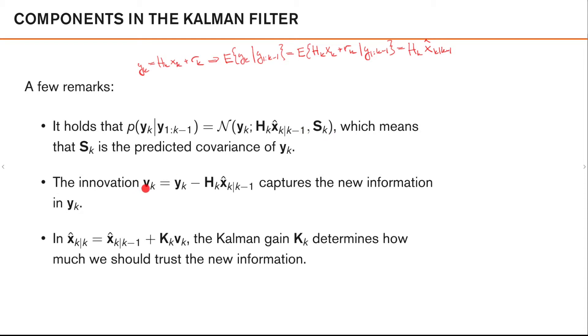Now, if we look at the innovation vk, we see that it's equal to the current observation yk, where we remove what we expect the measurement should be based on our previous knowledge. As such, vk captures the new information in yk, which we are not able to predict using our old information.